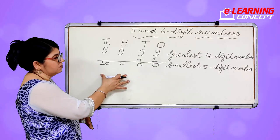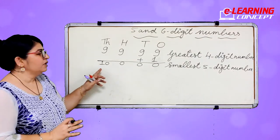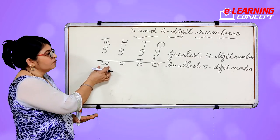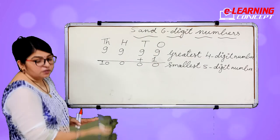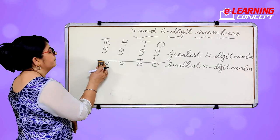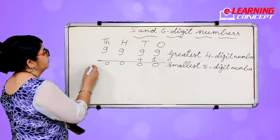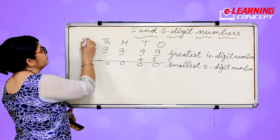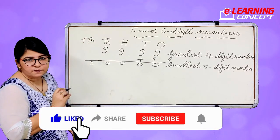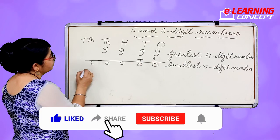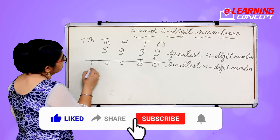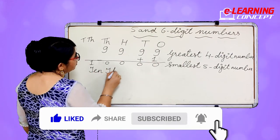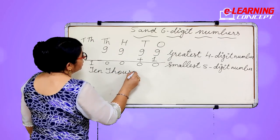This is the smallest 5 digit number. We cannot write 2 numbers at 1 place, so we will shift 1 number to the left side. This new place will be the 10,000 place. So we will read it as 10,000.